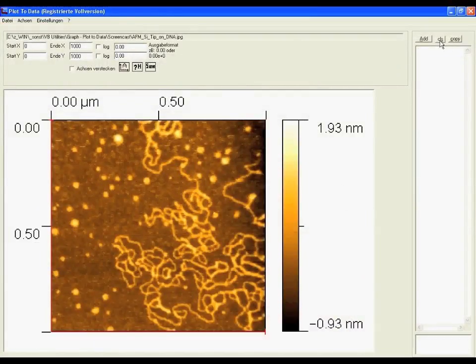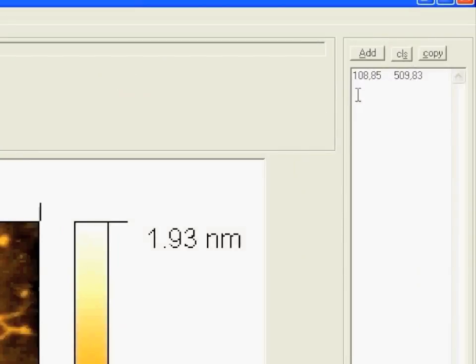Now we say here clear everything and if we click now somewhere then it will give us the coordinates. For example, if you click here then we see it is 108 from x and 509 nanometers from the y.